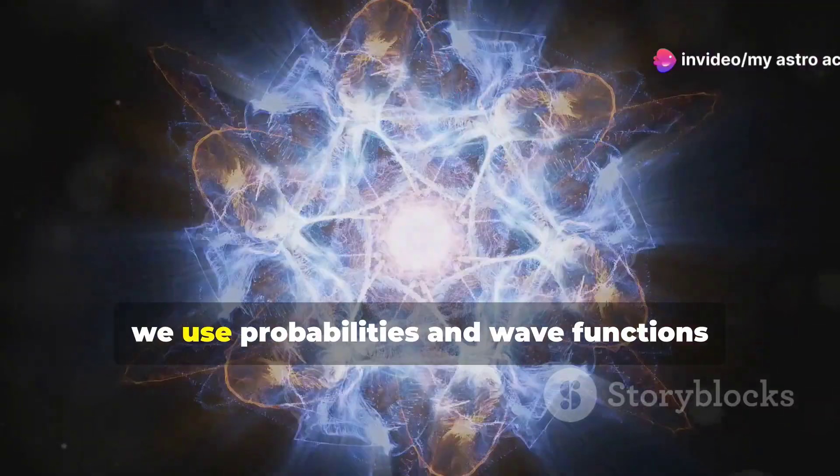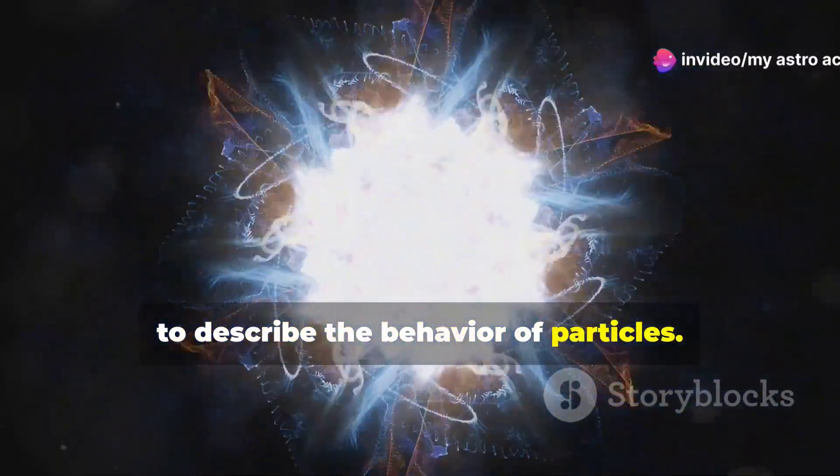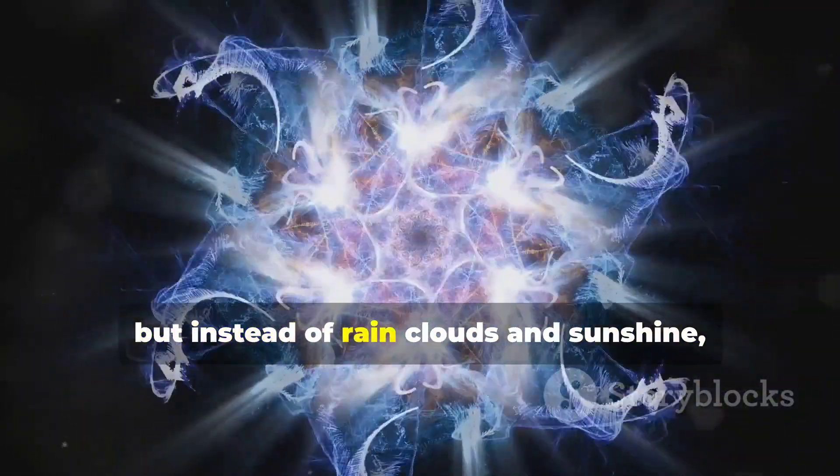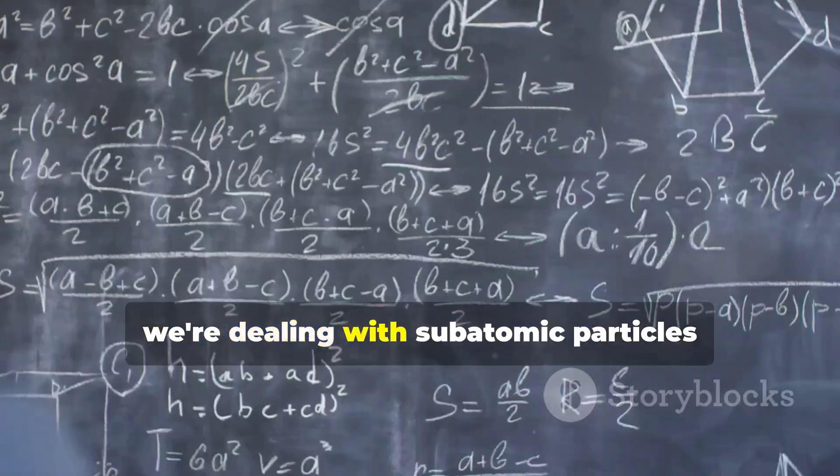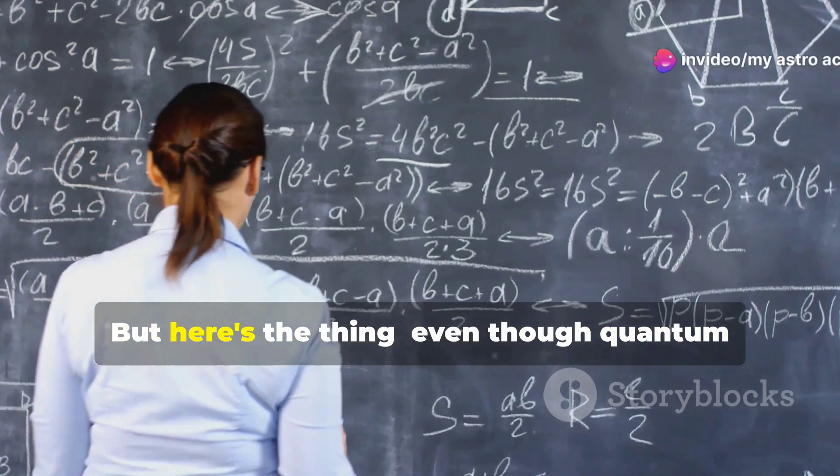In quantum mechanics, we use probabilities and wave functions to describe the behavior of particles. It's like trying to predict the weather, but instead of rain clouds and sunshine, we're dealing with subatomic particles that can be in multiple places at once.